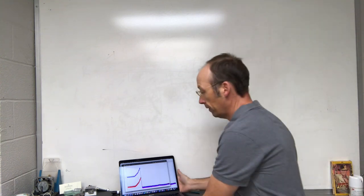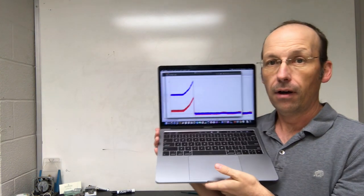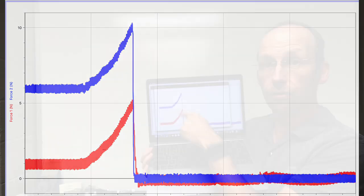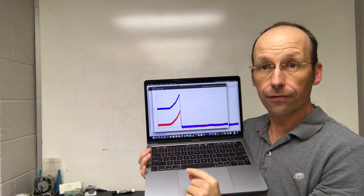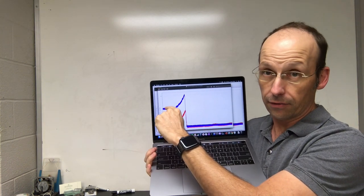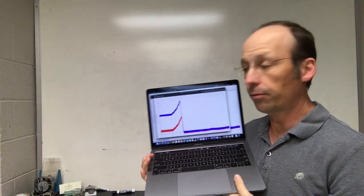Okay. So what would happen if I pull slowly? So here I have the tension in the two strings. So they start off and the top string has a higher tension. Okay. Why does the top string have a higher tension?